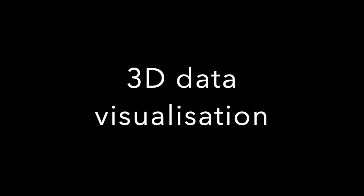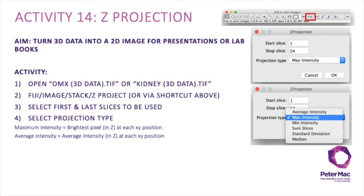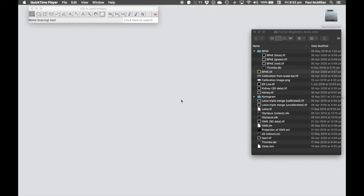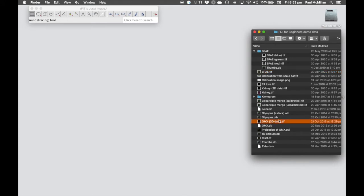Now we're going to look at how to present three-dimensional data either in a 2D format or using a movie for presentations. Activity 14 is creating a Z projection — taking all that 3D data and compressing it into a 2D image for a lab presentation or lab book. For all 3D data activities, we'll use either the omx3ddata.tif or the kidney3ddata.tif file.